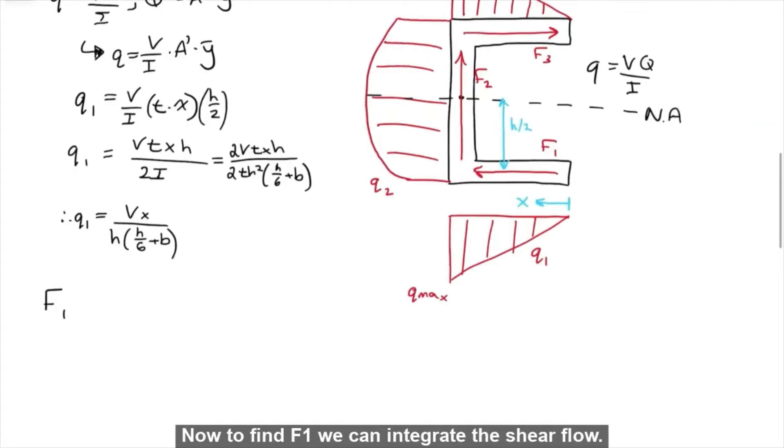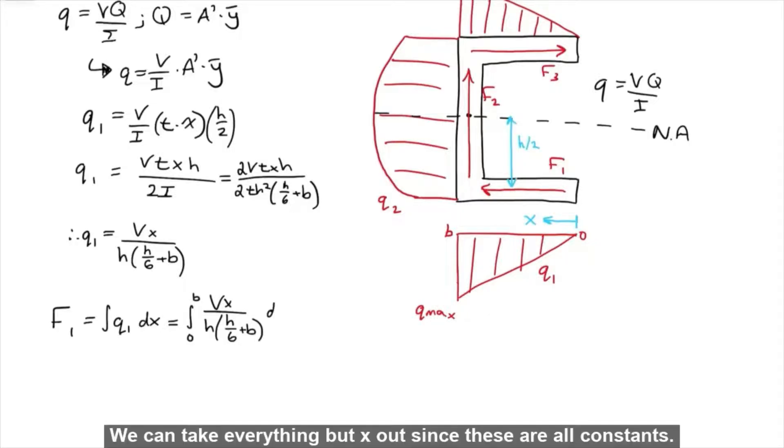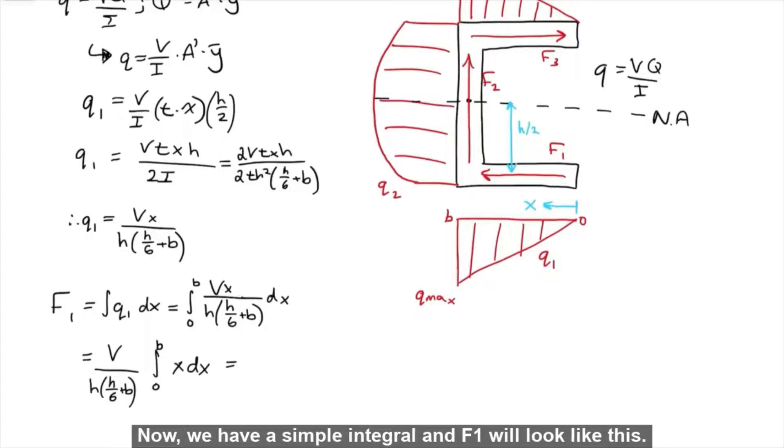Now, to find F1, we can integrate the shear flow, so let's integrate Q1. We can take everything but X out, since these are all constants. Now we have a simple integral, and F1 will look like this.